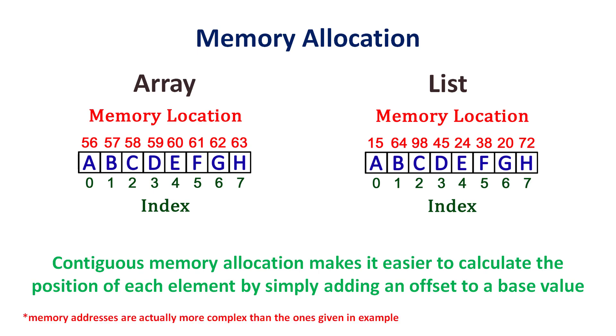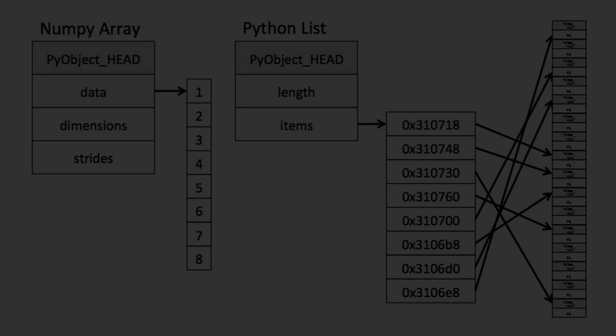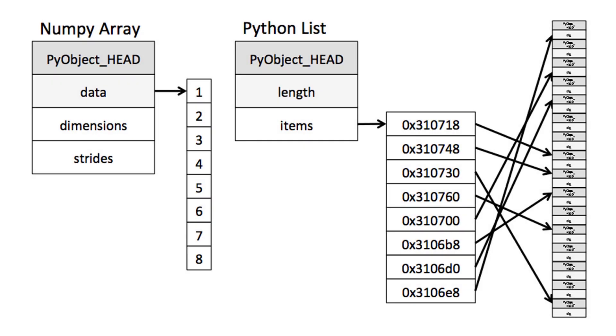It has to be noted that the memory addresses in real life are actually much more complex than the ones which I have taken in the example. The memory allocation system looks somewhat like this in real life. From here, you can clearly understand that a NumPy array has a much simpler mechanism compared to a Python list.